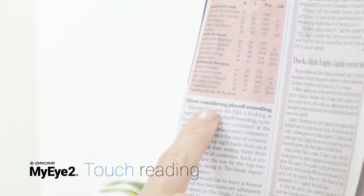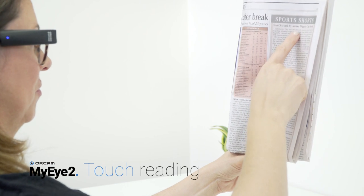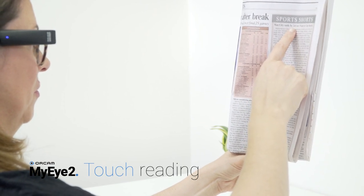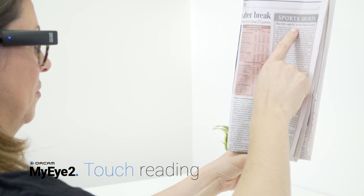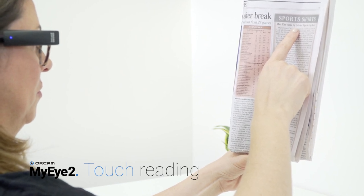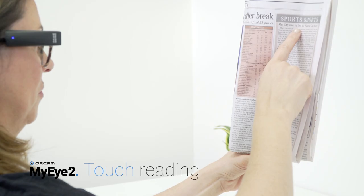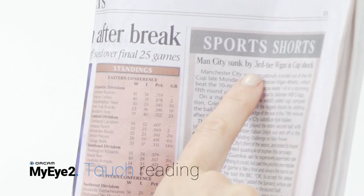Silver considering playoff receding. To read a new section, slide your finger to a new spot on the page. Do not lift your finger from the page. The camera will follow your finger to the next section you want to read. Man City sunk by third tier Wigan in cup shock.